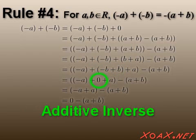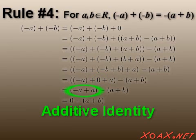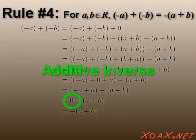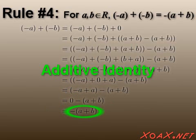Next, we use additive inverses. Then the additive identity allows us to remove the zero. Another application of additive inverses allows us to write this as zero. Finally, the additive identity finishes the proof.